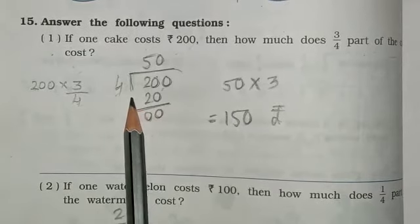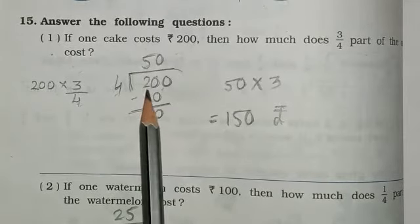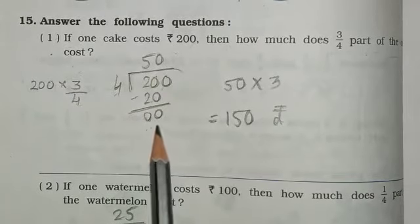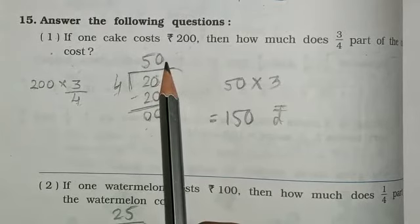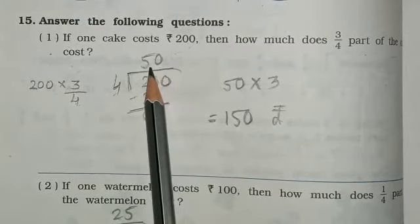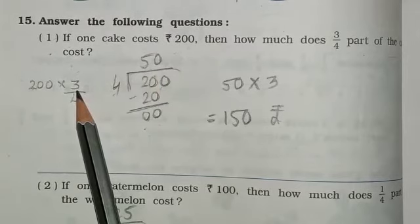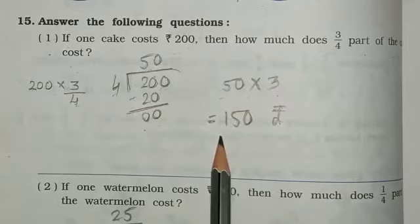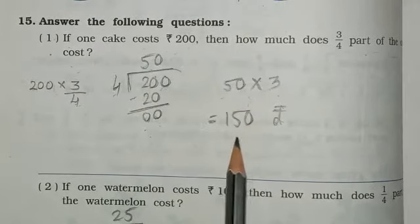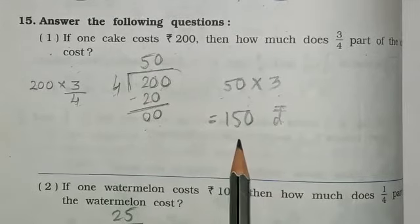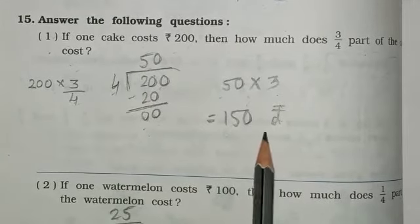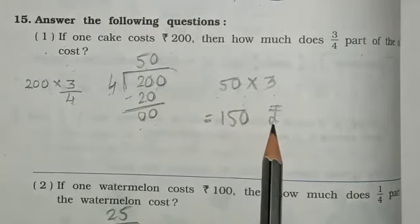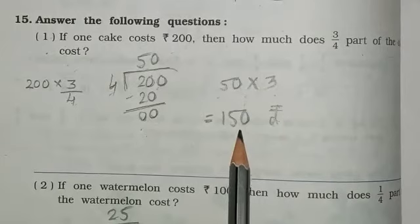We will do the minus sums. So 0, 0, 0 and 2 minus 2 is 0. The answer is 50. Then 50 multiplied by 3. So here write 50 multiplied by 3, which is 15, and adding 0 gives us total 150 rupees. So 1 cake is Rs.200 and 3 upon 4 part is 150 rupees. Our first sum is completed.